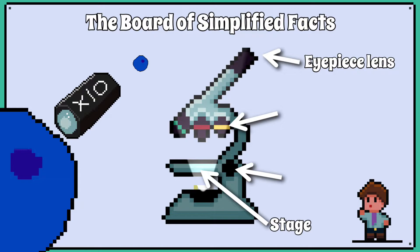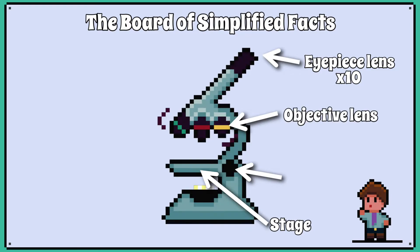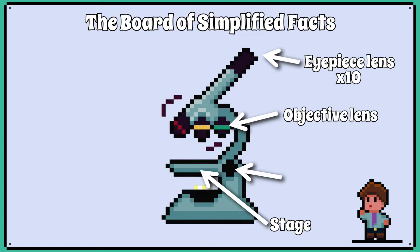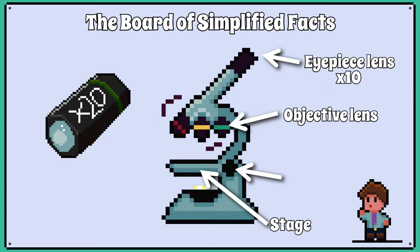We say the eyepiece lens has a magnification of ×10. The three colour-coded lenses are called the objective lenses and they can be twisted so we can change which one we use. Each objective lens has a different magnification, for example ×4, ×10, and ×20.